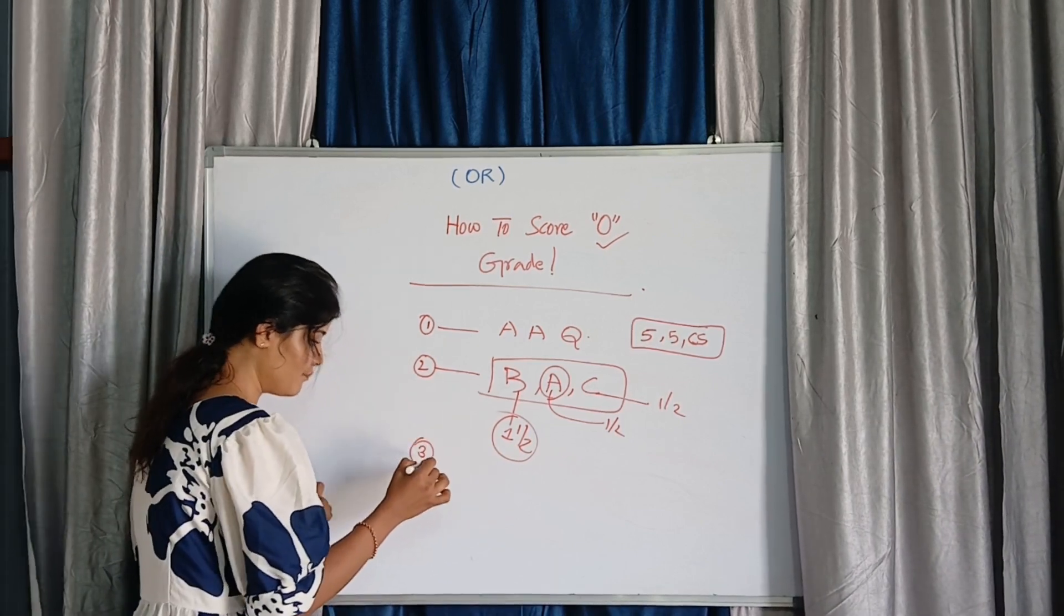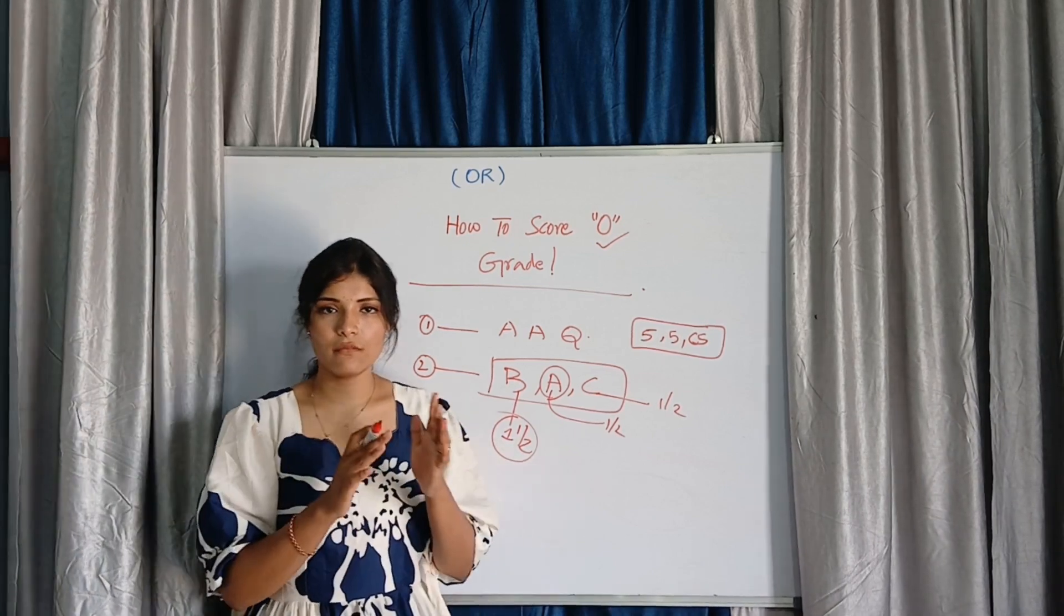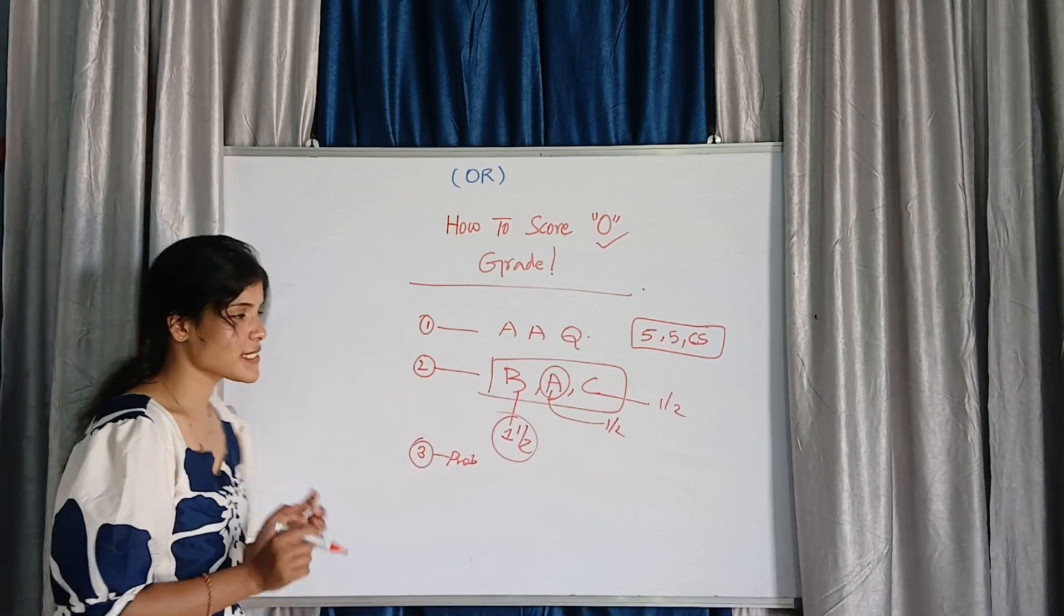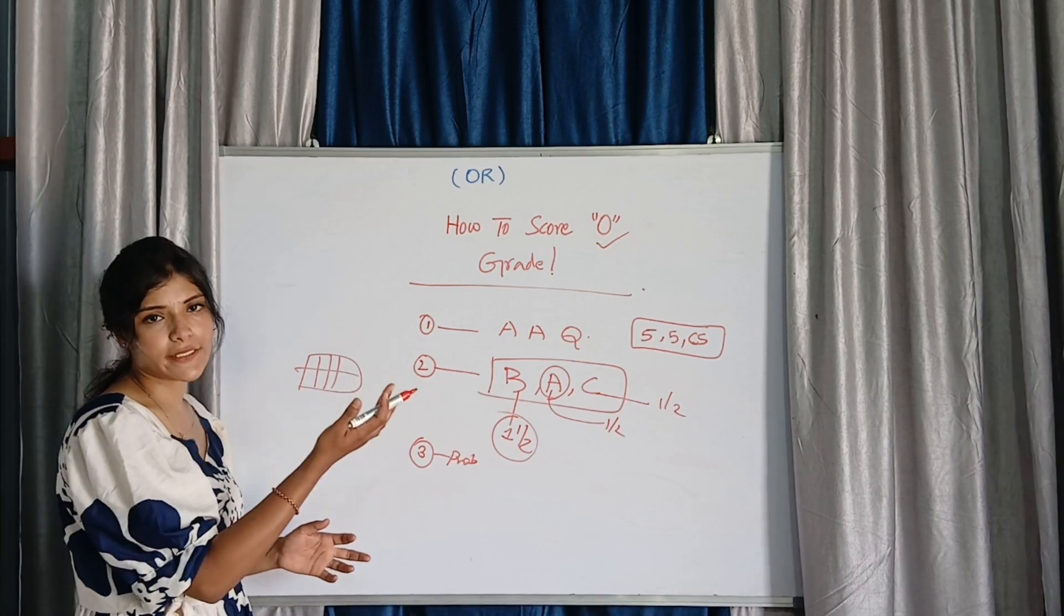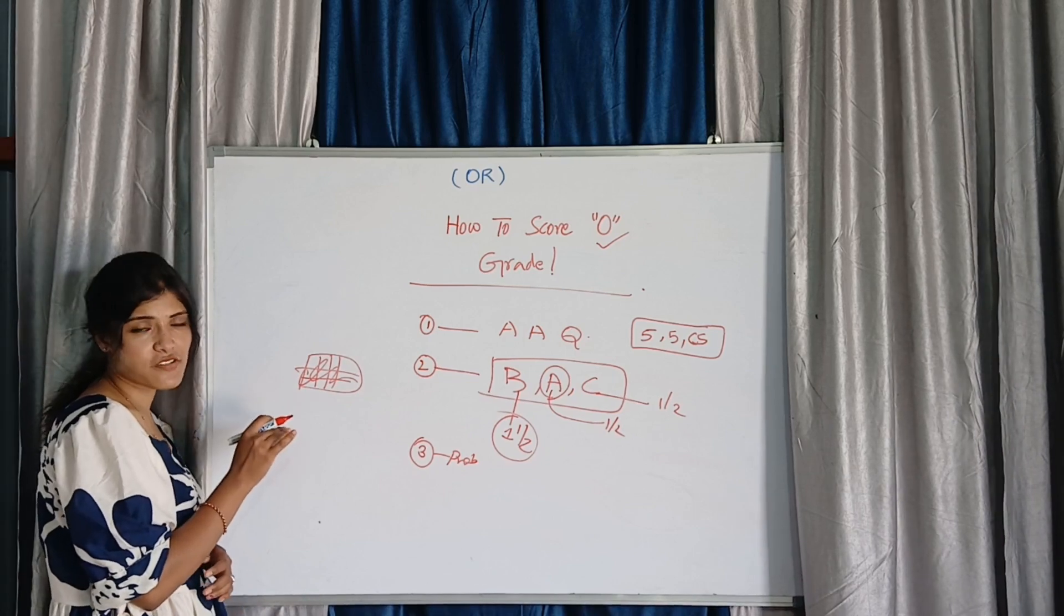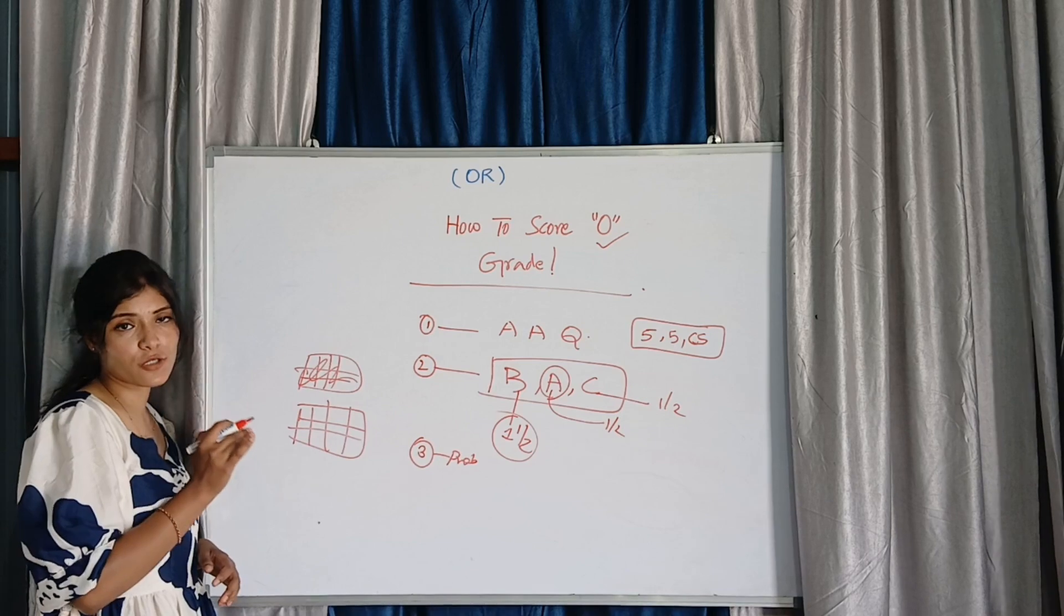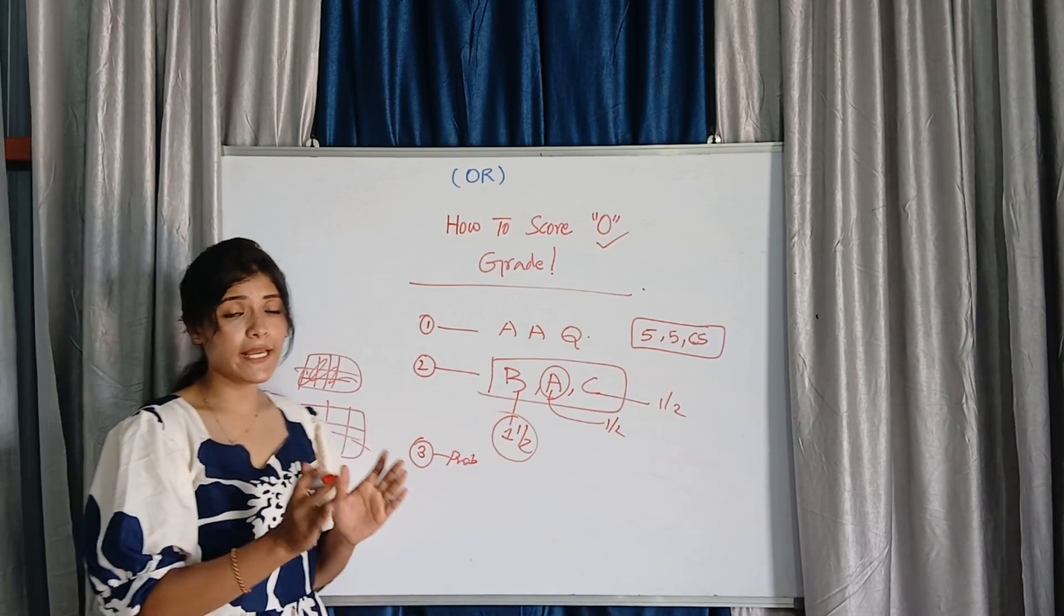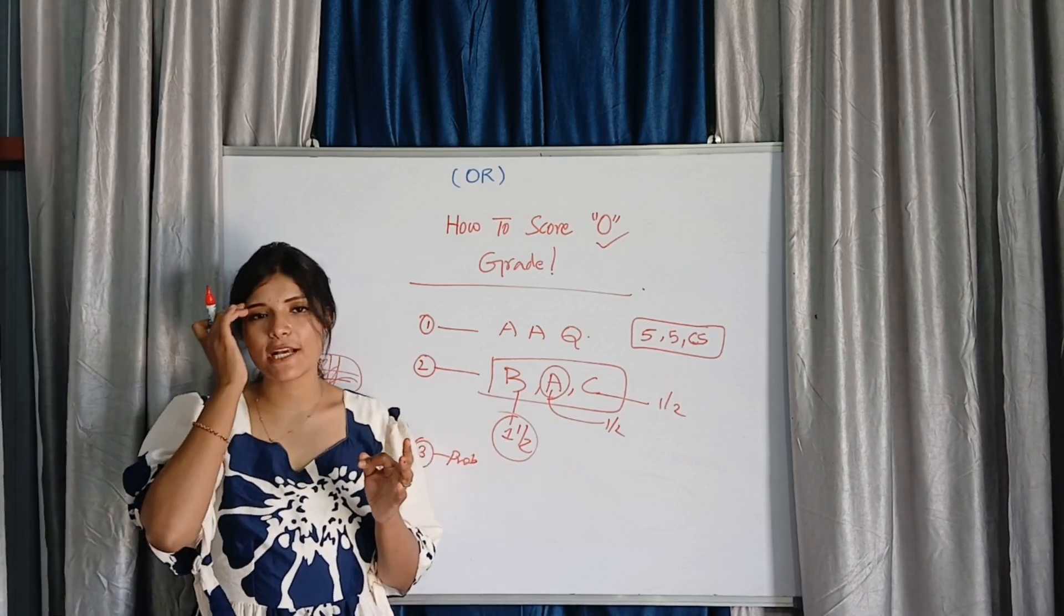Third one: When you are attempting problems, in middle of the sum you have forgot the steps. Some of the students what they will do - here something you need to write but you don't know what you need to write, you forgot it. Some students what they will do is they will strike off like this.